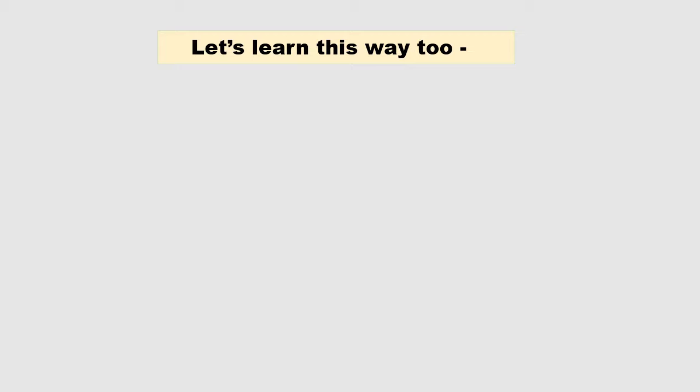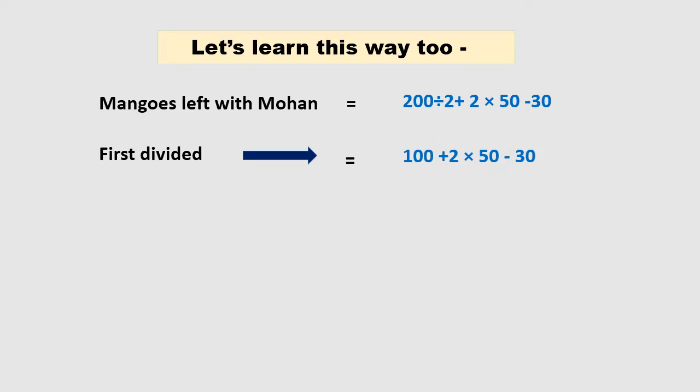Children, we have another way to solve this problem. Let's learn this way too. Mangoes left with Mohan: 200 divided by 2 plus 2 times 50 minus 30. First divided: 200 divided by 2 plus 2 times 50 minus 30.